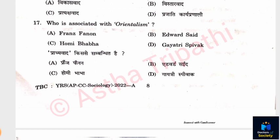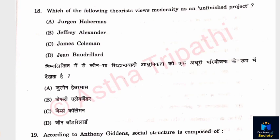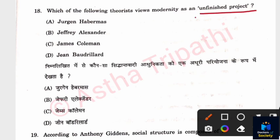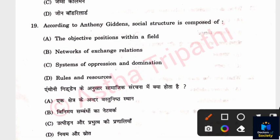Question 17: Who is associated with Orientalism? Options: Franz Fanon, Edward Said, Homi Bhabha, Gayatri Spivak. The answer is Edward Said. Question 18: Which of the following theorists views modernity as an unfinished project? Options: Jürgen Habermas, Jeffrey Alexander, James Coleman, Jean Baudrillard. The answer is Jürgen Habermas. Question 19: According to Anthony Giddens, social structure is composed of what? The answer is rules and resources.